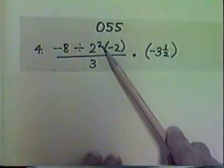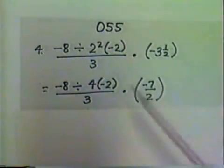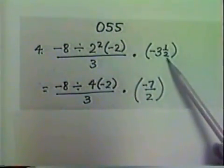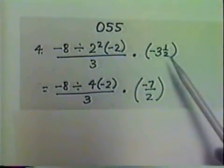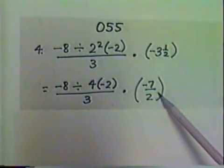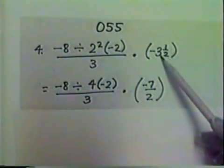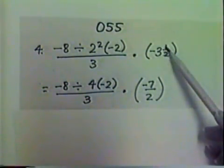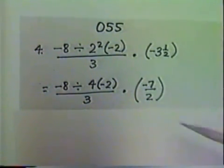So we do 2 squared, which is 4. And while we're at it, let's change the negative 3 and 1 half to an improper fraction, negative 7 halves, to have it ready to work with. In multiplying, we must convert mixed numbers into improper fractions in order to work with them. And so 2 times 3 is 6 plus 1 is 7, negative 7 halves is that improper fraction formed for negative 3 and 1 half.